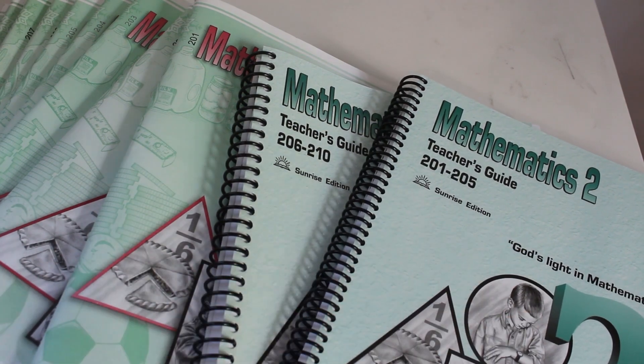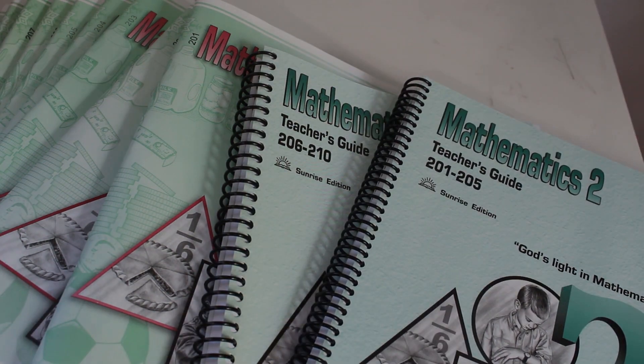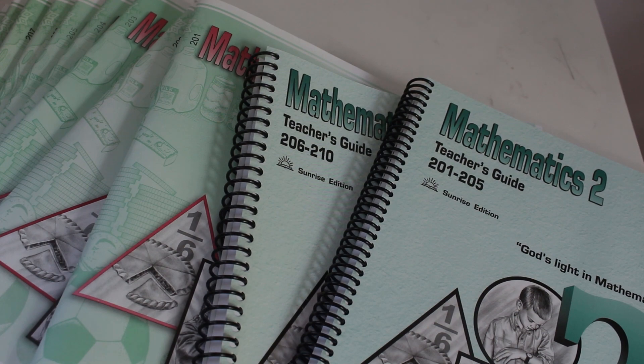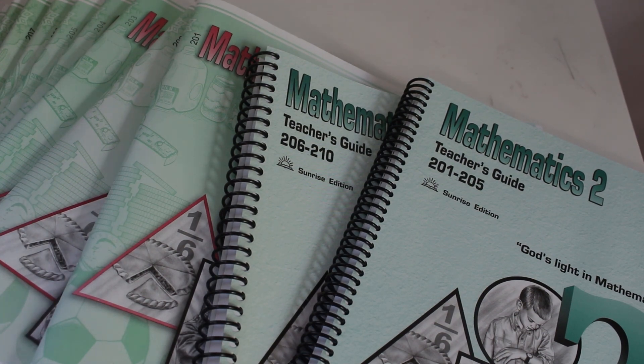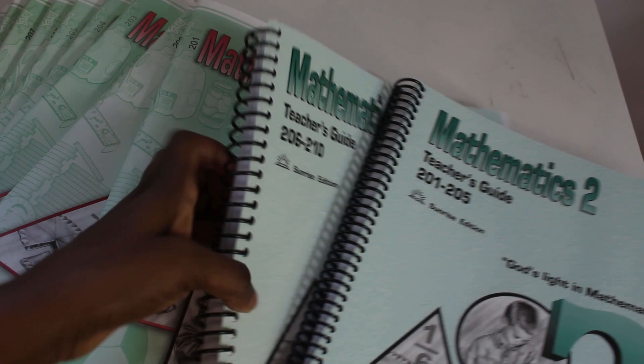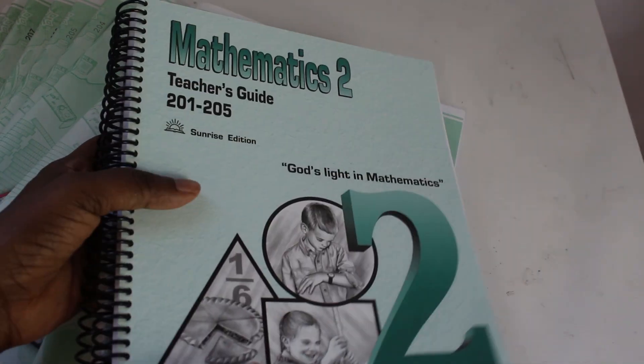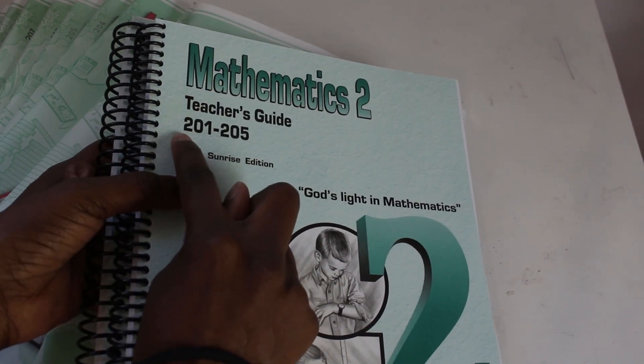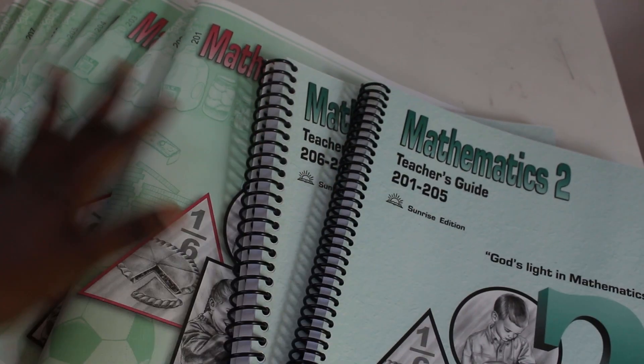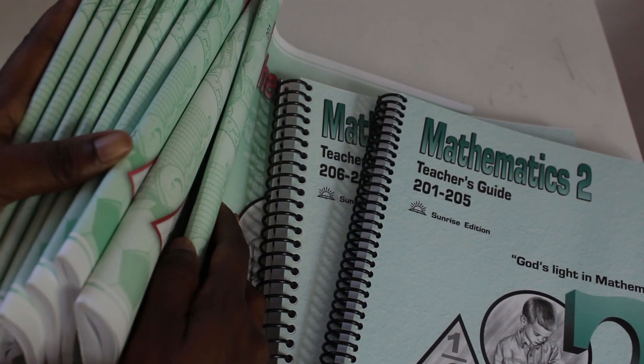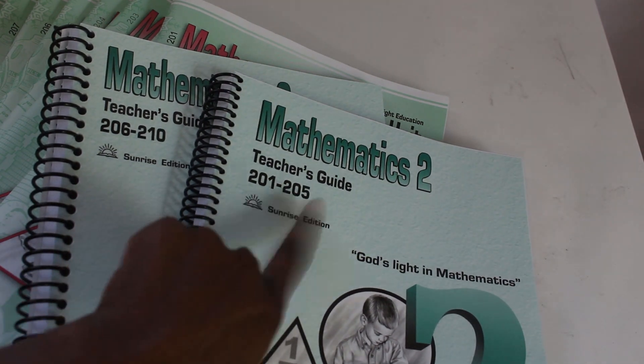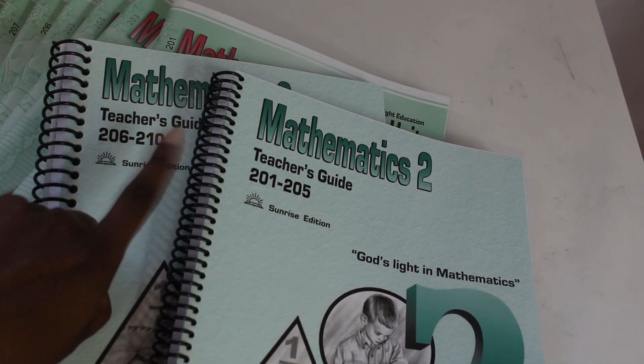Okay, so my friend Megan from Pennies and Salt has a flip-through of the CLE Math Level 1. So I'm just going to do Level 2 and 3 for you guys, and I'll link her video down where she flips through Level 1. So Level 2 and 3 comes with two teacher's guides and 10 light units.